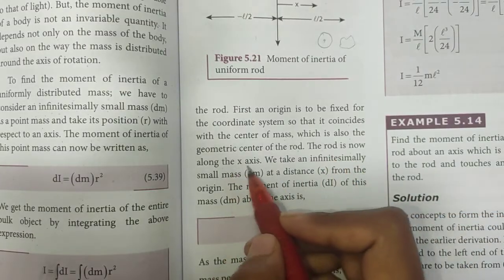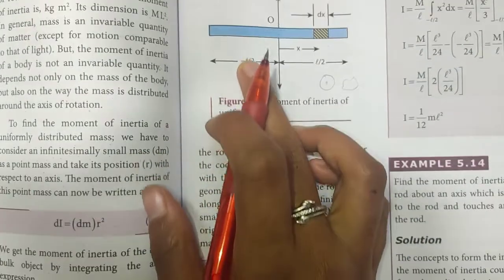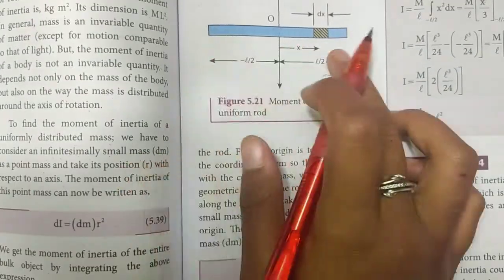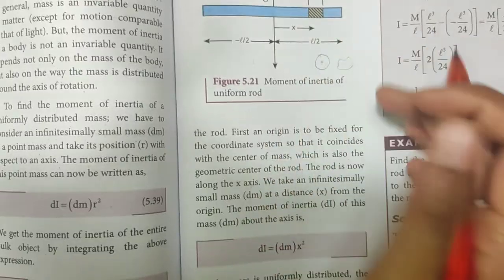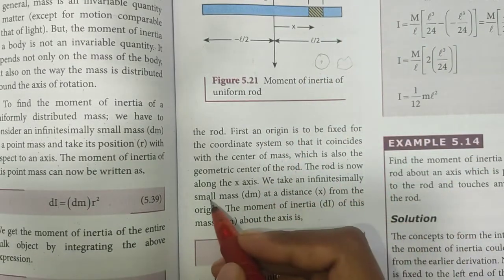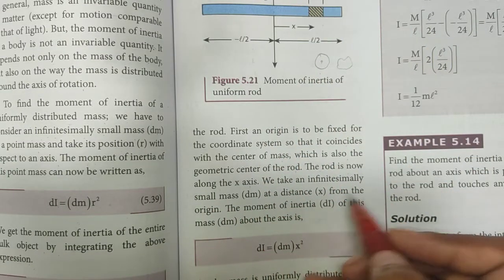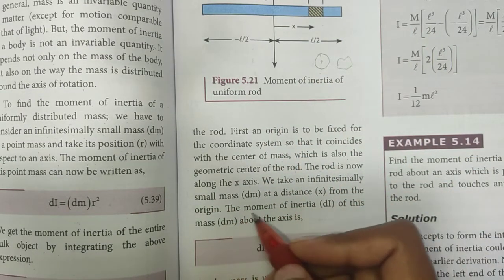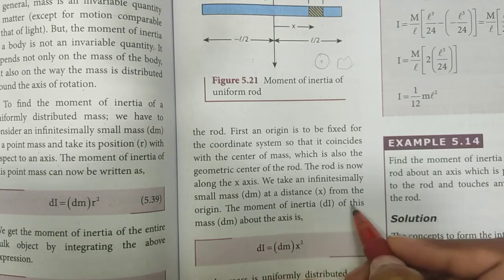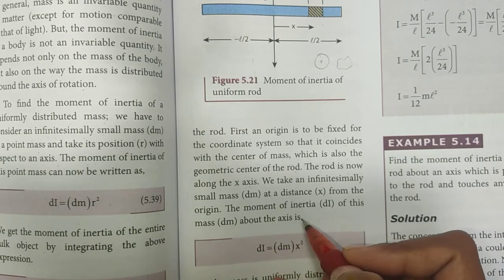The rod is now along the x-axis. We take an infinitesimally small mass dm at a distance x from the origin. The moment of inertia dI of the mass dm about the axis is to be determined.